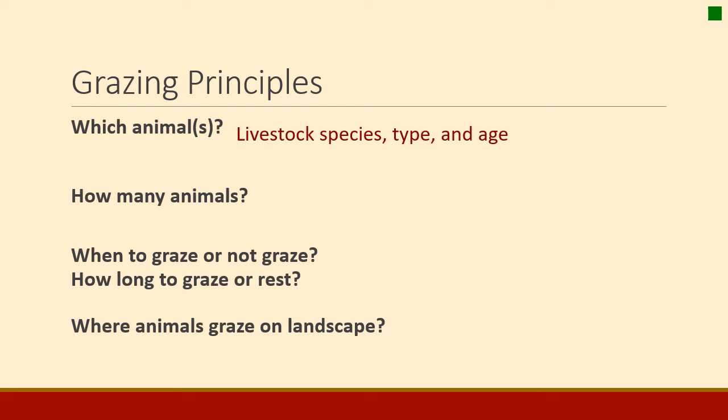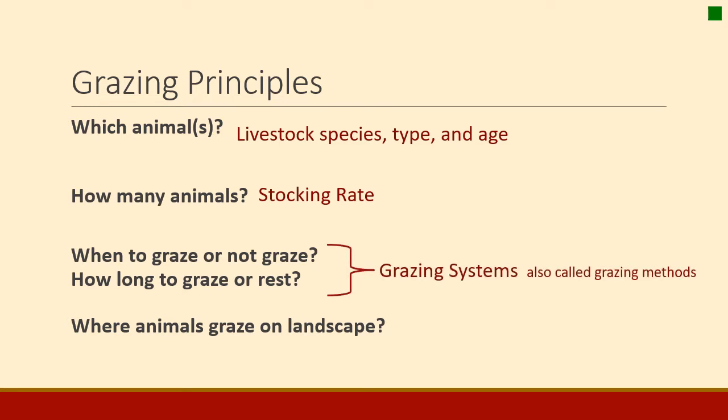The next question is how many animals? How many are out on the range, and how many should be out on the range? That is stocking rate. We will talk today about stocking rate and how it's set and how we manage that. There are a few other things, like when should we graze the pasture, when should we rest it? All of those questions about how one piece of land is grazed or rested fall under the category of grazing systems, which we'll talk about later in this course.